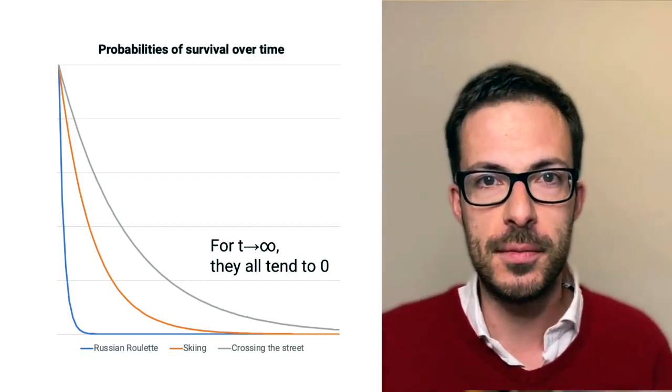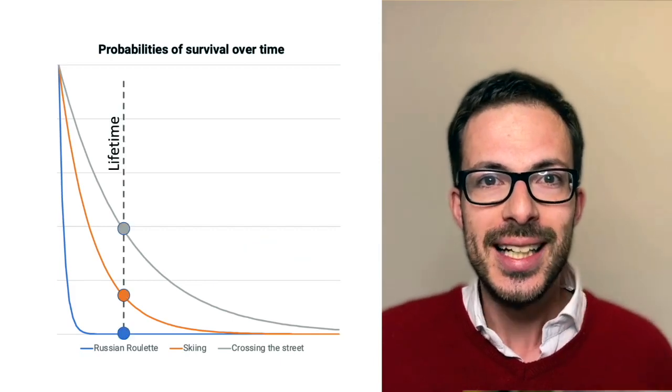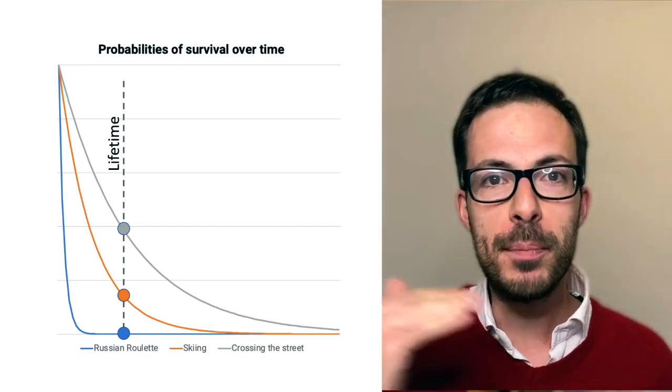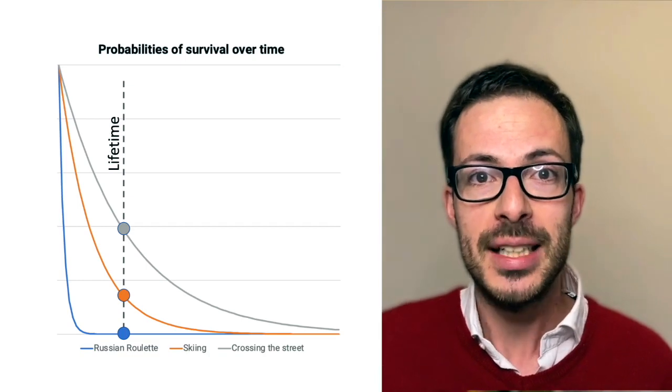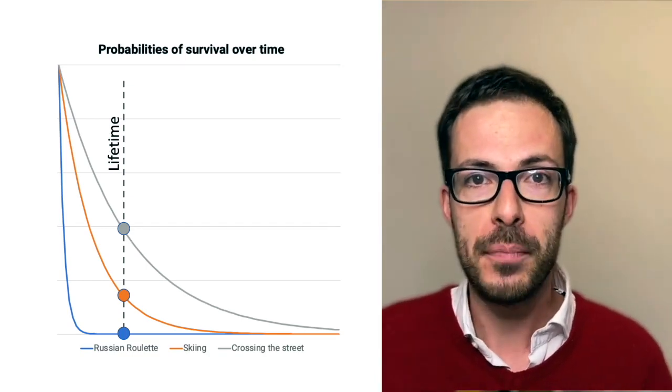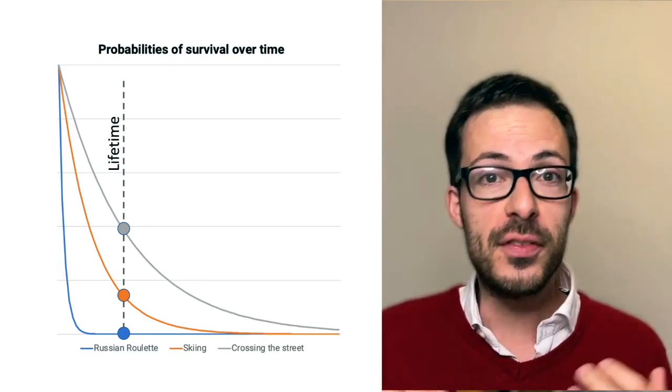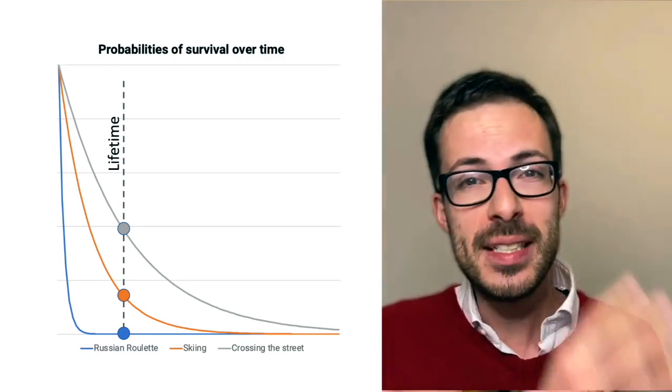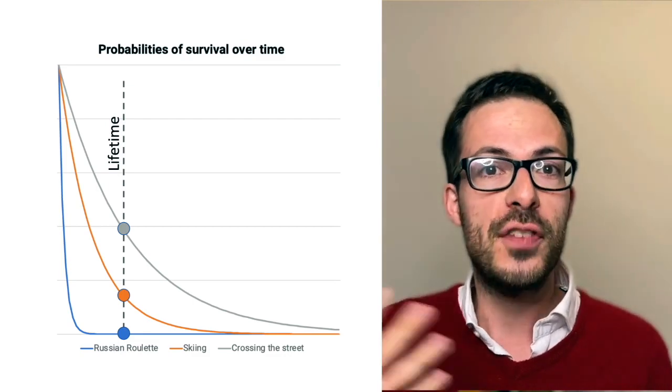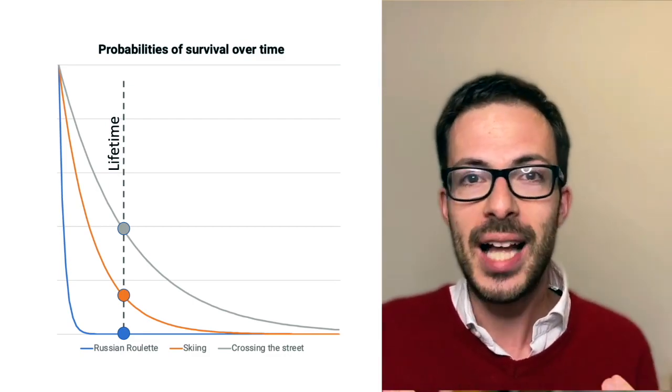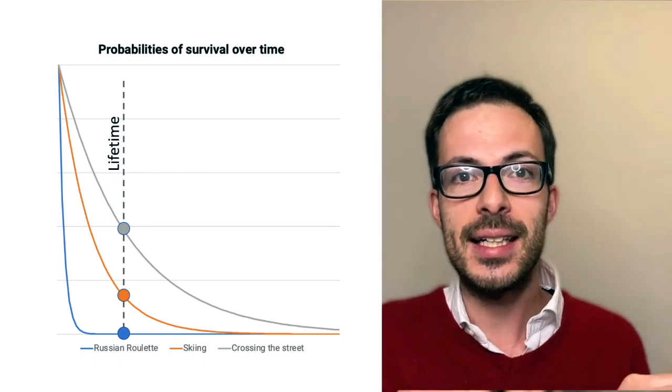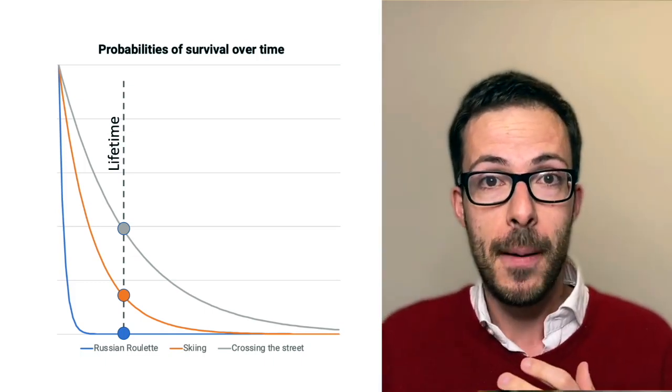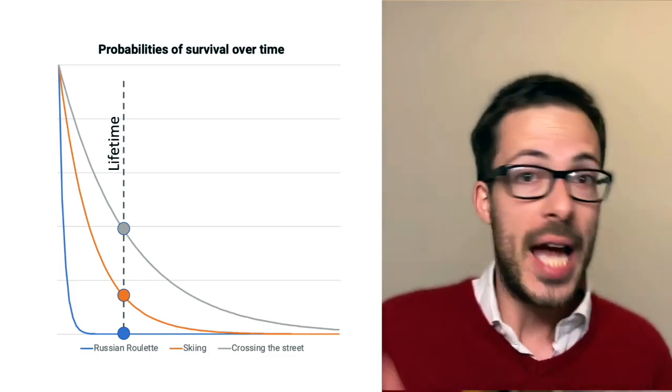But that doesn't help us much in taking decisions. What's much more interesting is to look what happens over finite time frames, for example, over a lifetime. And here we can see that if someone plays Russian roulette for their whole lifetime, their lifetime will be really short and they will die at some point. But what about skiing? Most people, if they ski over the lifetime, they will not have any significant injury. But there will still be a significant percentage of people for which if they try to ski for a lifetime, at some point they will have a skiing ending injury. Therefore, we can see that skiing is still non-ergodic, but still more ergodic than Russian roulette.